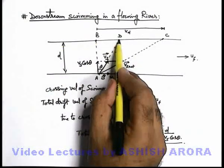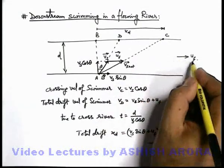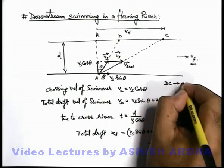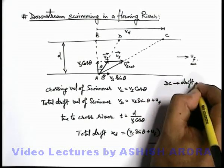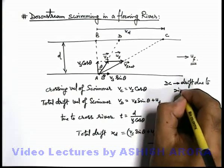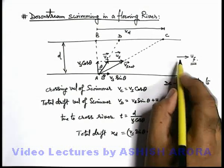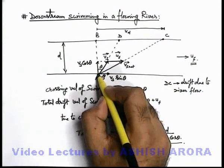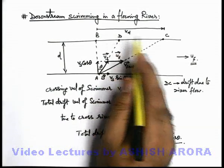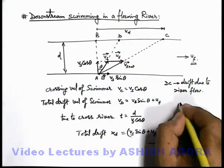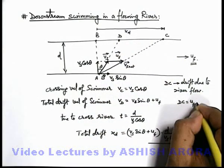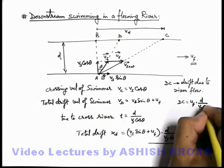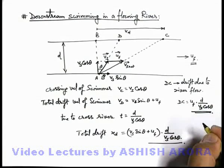If we calculate drift due to river flow only: the distance DC can be written as drift due to river flow. Because if river current were not there — if water were at rest — the swimmer would reach point D. So DC is the drift due to river flow, and DC equals u_f multiplied by the time to cross the river: u_f × (d / v_s cos θ). Keep this in mind and re-analyze the situation.